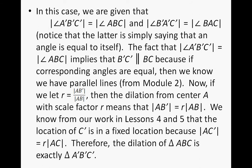In this case, we are given that the angle measure of A'B'C' is equal to the angle measure of ABC. And conversely, the angle measure of B'A'C' is equal to the angle measure of BAC. Notice that the latter is simply saying that the angle is equal to itself because the prime angle and the original angle are, in fact, the same. The fact that we have angle A'B'C' equal to angle ABC implies that B'C' is parallel to BC. Because corresponding angles are equal, then we know we have parallel lines, from Module 2 when we talked about congruence.